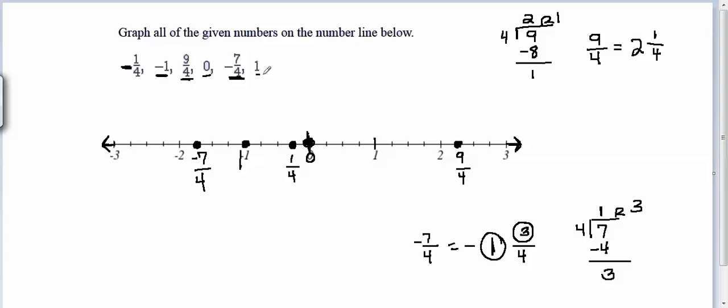The last value we need to graph is 1, so we go to 1 on the number line and draw a circle. To check your answer here, make sure that the number of dots on your line when you're finished is the same as the number of numbers you were given to graph. We were given 1, 2, 3, 4, 5, 6 numbers to graph, and there are 1, 2, 3, 4, 5, 6 circles on my graph.